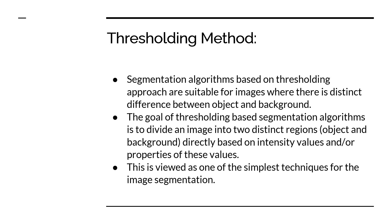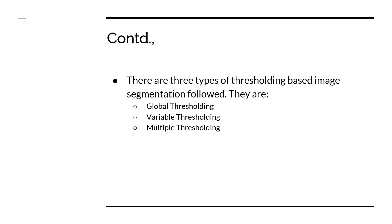The fundamental idea is to separate and group components which share some common properties. Thresholding plays a key role where there is a distinct difference between object and background. This is the simplest and easiest of all segmentation techniques. There are three types within thresholding: global, variable, and multiple — which we will explore in depth later.